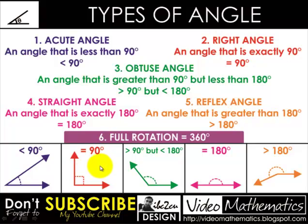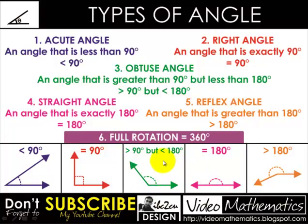Look here, this is a right angle. Now this is an obtuse angle — an angle that is greater than 90 degrees but less than 180 degrees is obtuse. And then look here — a straight line. This is called a straight angle — an angle that is exactly 180 degrees.